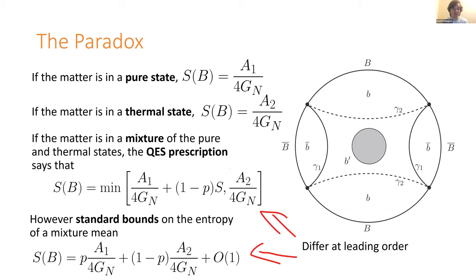If I plug in the value of P that makes these two prescriptions equal, one gives A2/4G Newton and the other gives P·A1/4G + (1-P)·A2 — they differ at leading order. So there's a paradox.